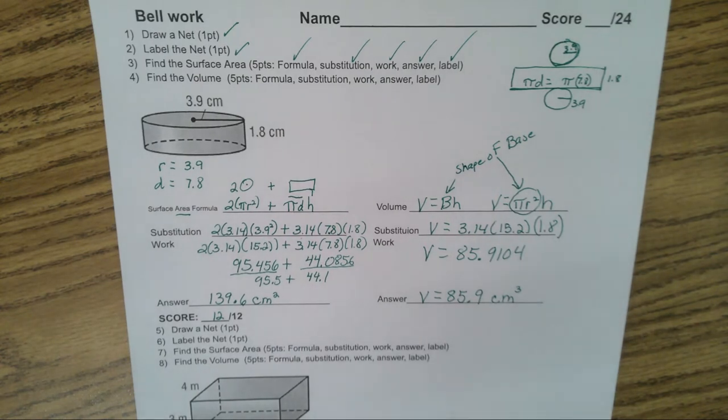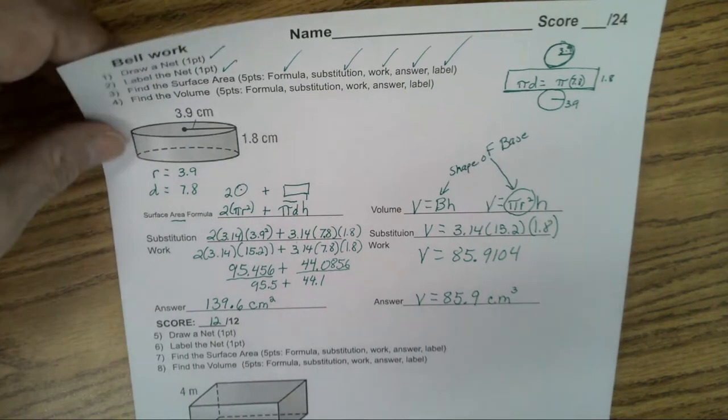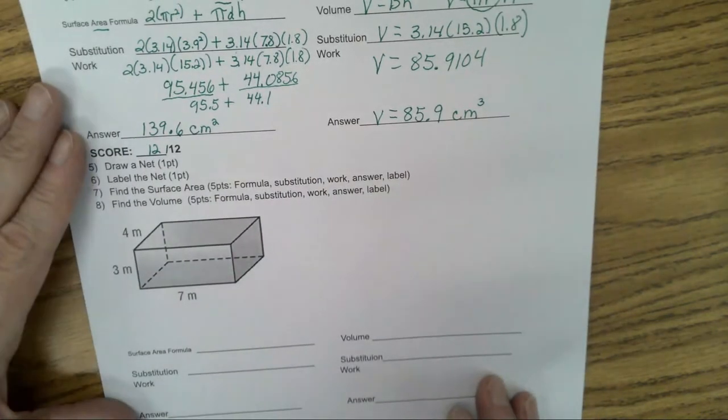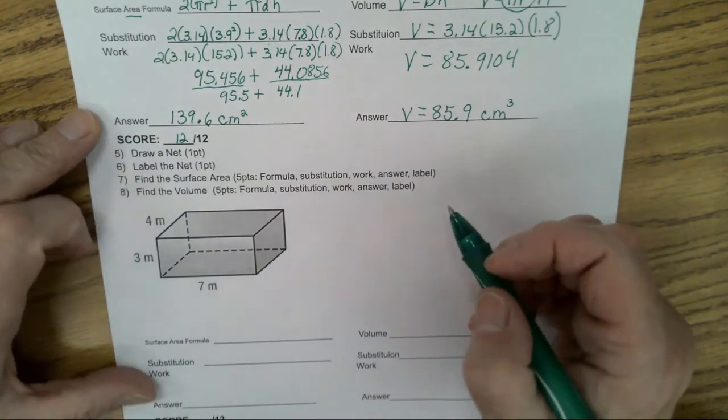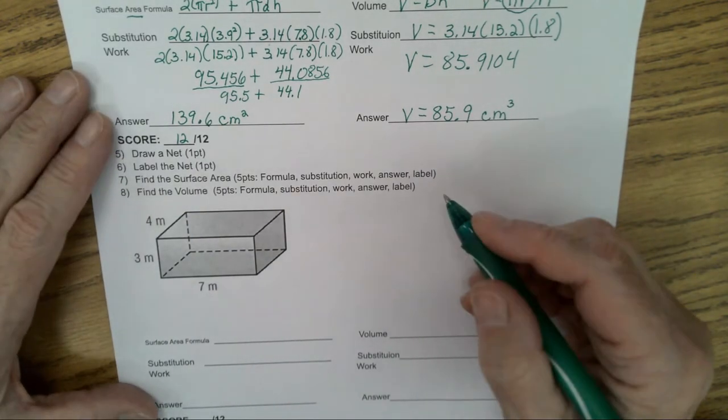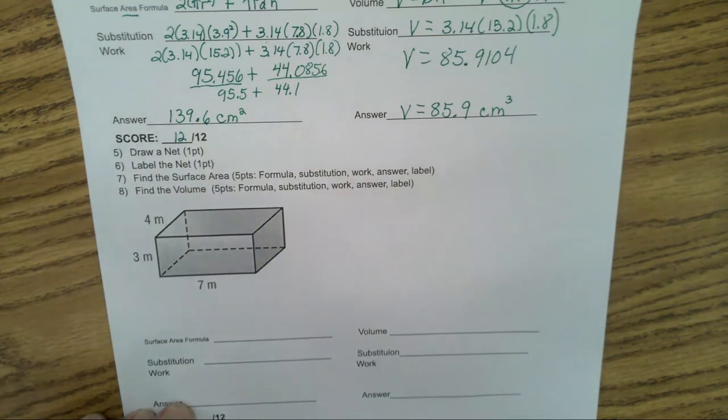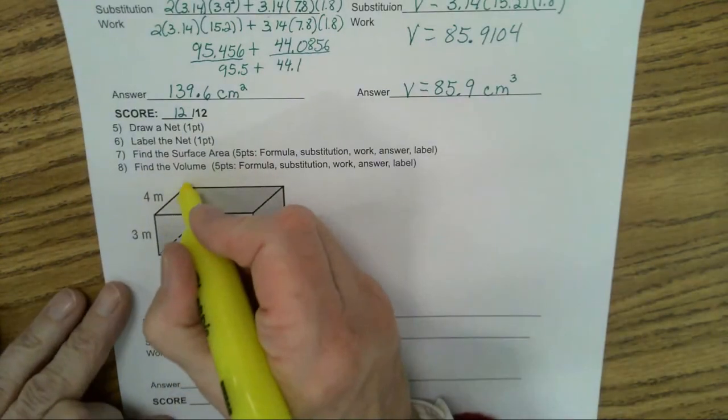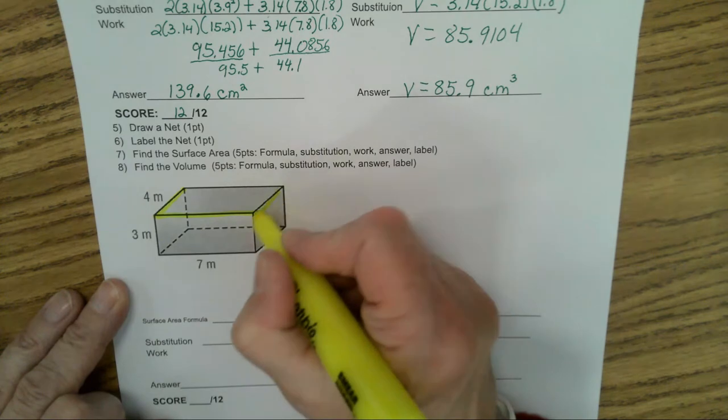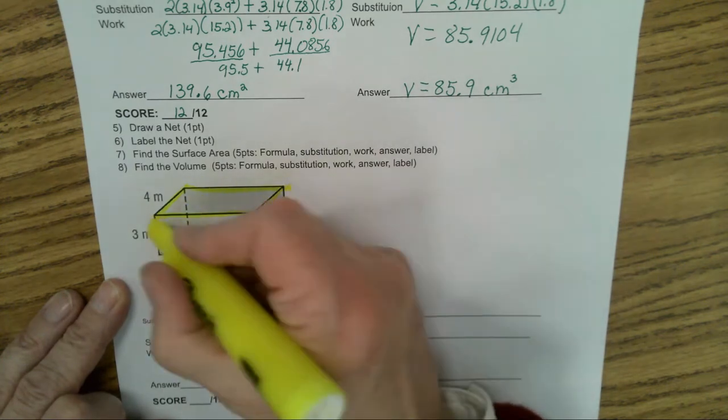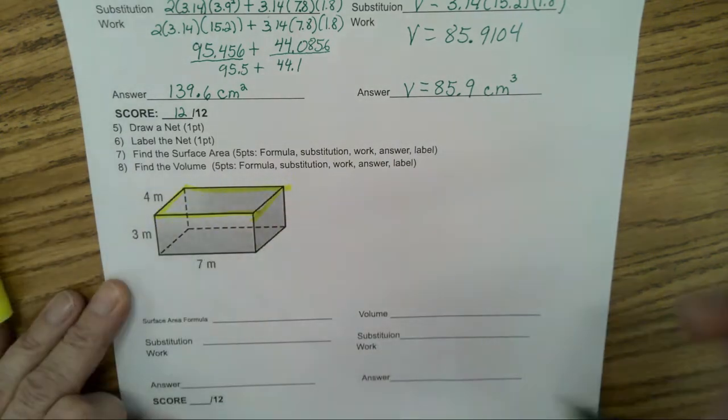Are we ready to now do surface area and volume of a rectangular prism? This is a little bit easier. The net's a little harder to draw, but then the formula, you don't have circles in it. So let's draw a net. Now, I like starting with the top. And if you have problems seeing the numbers to use, kids, trace it. This is the top. I'm going to start with my top. It is four by seven. Because I know this is the same as this. So I'm going to start with the top.